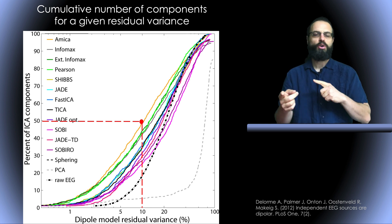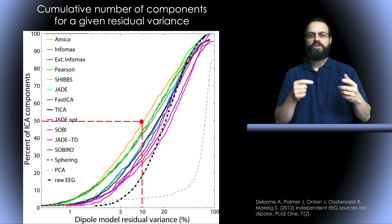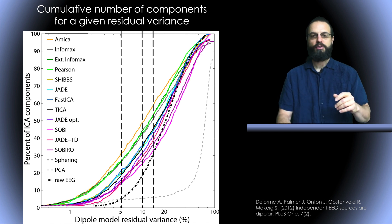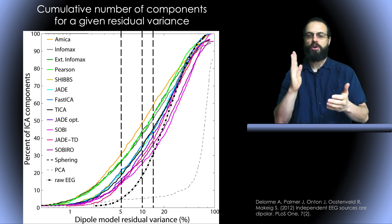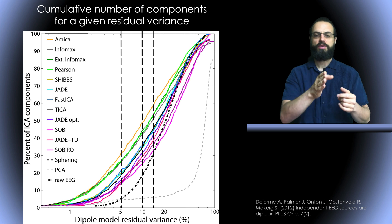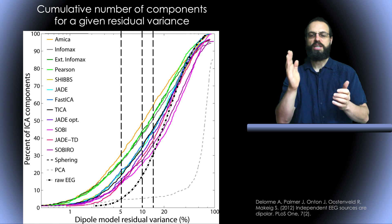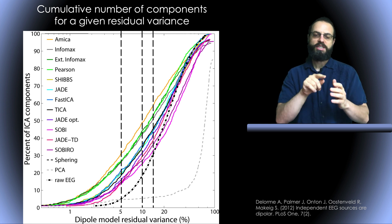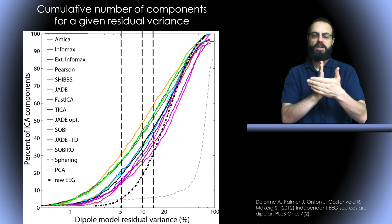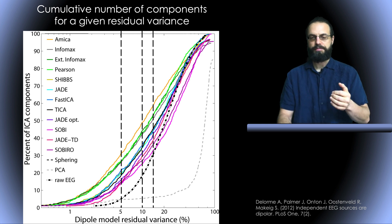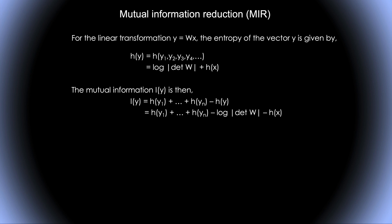What we're interested in seeing is how this is correlated with whether the ICA algorithm performs well or not on the data. For this, what we did is that we set thresholds on residual variance. I'm going to show you a curve where we set the threshold at 5%, but we also tried different thresholds—10%, 15%, etc. That allows us to compare at one specific threshold the different ICA algorithms.